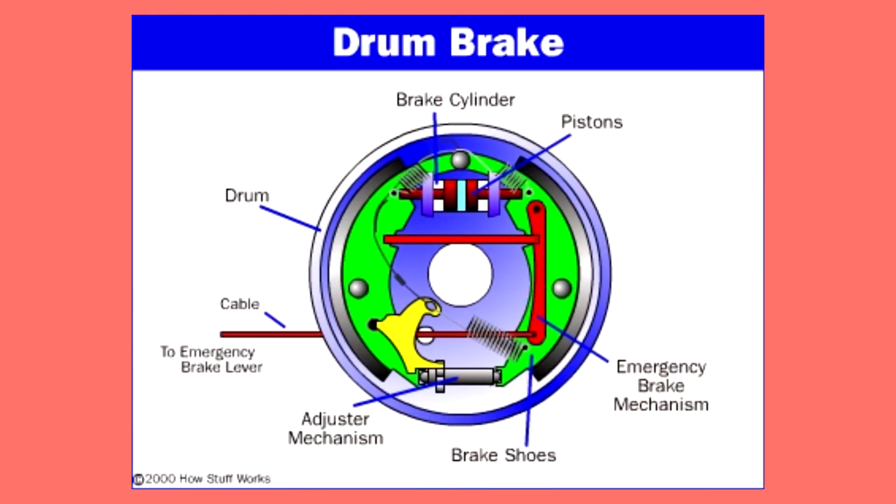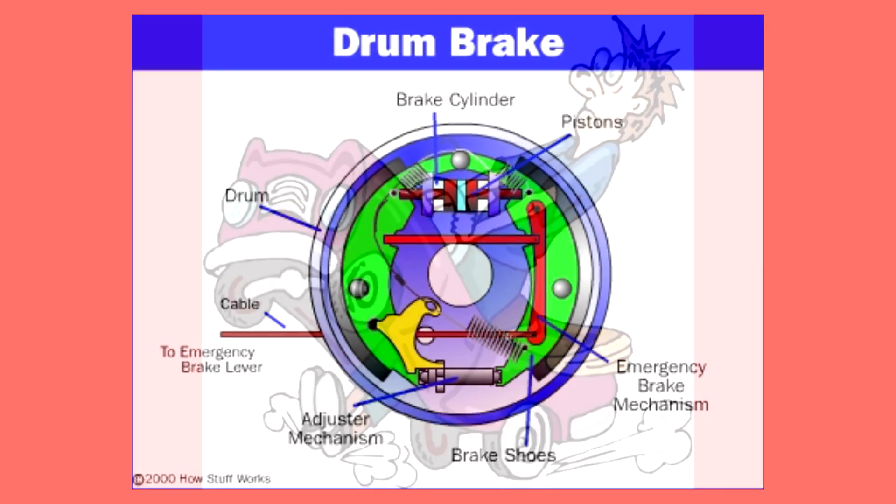Now let's talk about the drum braking system and its function. It is an ancient and traditional brake system. It is a drum-shaped component used for braking. Inside the drum there is a set of brake shoes. When the brake pedal is pressed, it forces the shoes against the drum and reduces the speed.